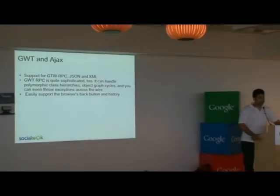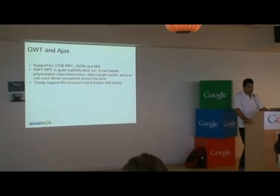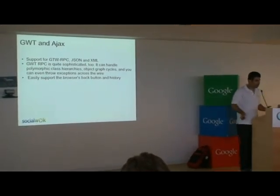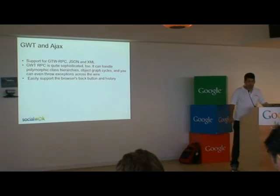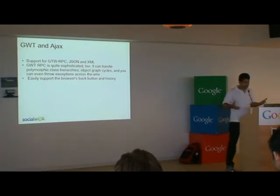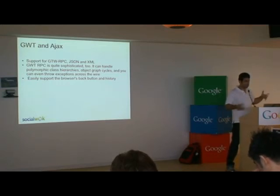Ajax is a big part of web development today, and GWT has a lot of support for Ajax — multiple ways to handle asynchronous JavaScript. GWT RPC is probably the most sophisticated method. It's more complex, but very cool because you can move objects between your servlets and your interface almost seamlessly. If you have a data structure like a hash table in your servlet, it'll just show up in your web interface, and you can move it back and forth.